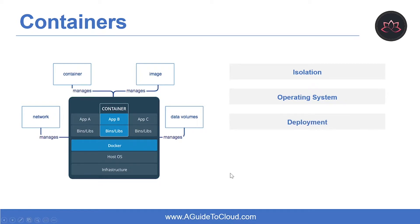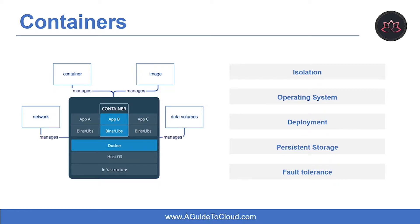The next feature is deployment. You can deploy individual containers using Docker via command line, and you can deploy multiple containers by using an orchestrator such as Azure Kubernetes Service. The next one is persistent storage — you can use Azure Disk for local storage for a single node, or Azure Files, which is an SMB share for storage shared by multiple nodes or servers. And containers are fault-tolerant: if a cluster node fails, any containers running on it are rapidly recreated by the orchestrator on another cluster node.